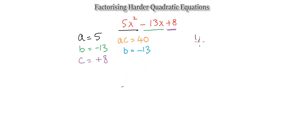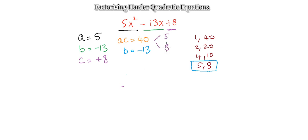Finding the factors of 40: we can have 1 and 40, 2 and 20, 4 and 10, or 5 and 8. Looking for a pair that adds to 13 — that's 5 and 8. Now considering the signs: multiplying to get positive 40 means both numbers are the same sign. If both positive, they add to positive 13; but we need negative 13. Therefore both numbers are negative: minus 5 and minus 8. So minus 13x breaks down into minus 5x and minus 8x.